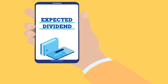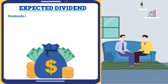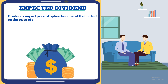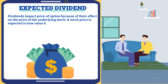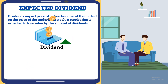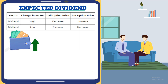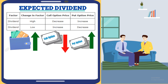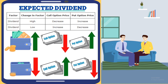Okay, so what about the expected dividend? Dividends impact the price of the option because of their effect on the price of the underlying stock. In general, a stock price is expected to lose value by the amount of dividends. So a high dividend means a lower call price and a higher put price. If the expected dividend is high, call option prices will decrease and put option prices will increase. Conversely, if the expected dividend is low, call option prices will increase and put option prices will decrease.